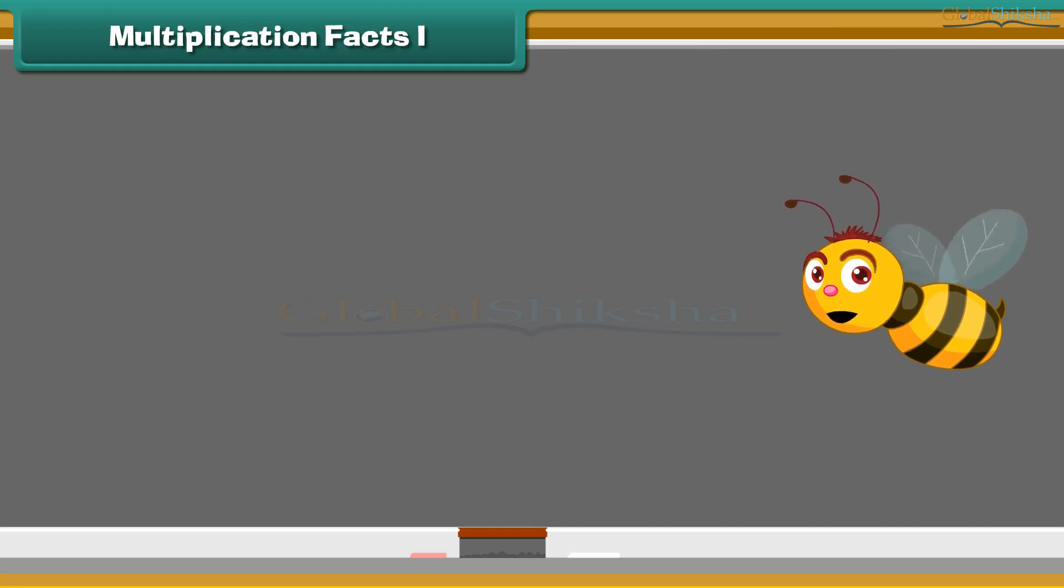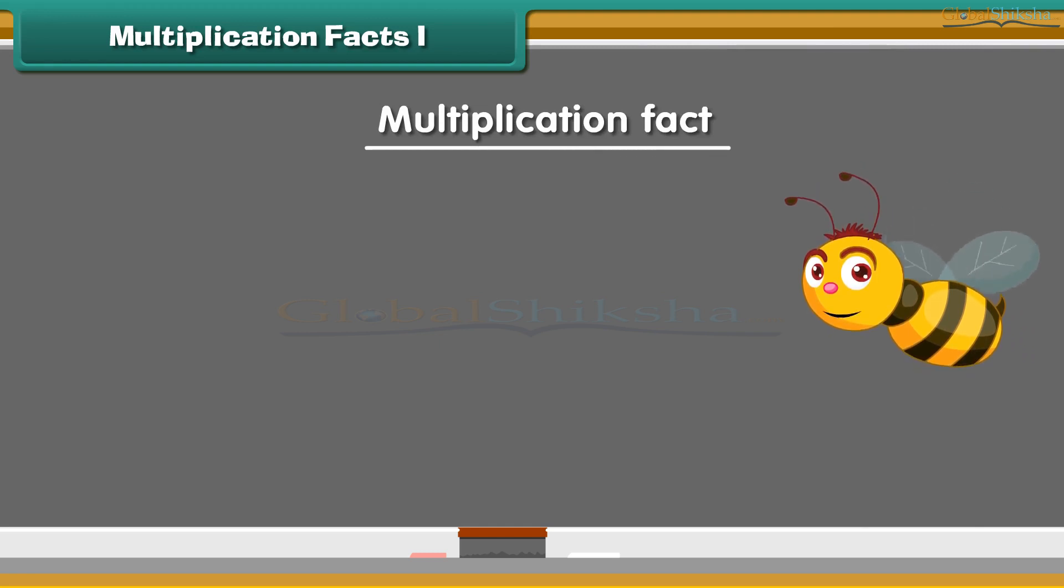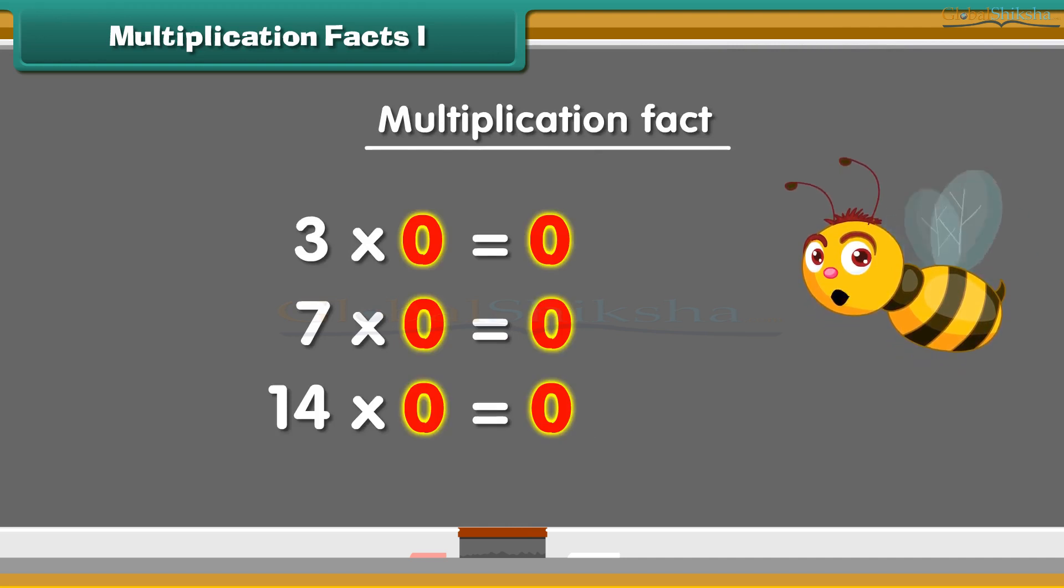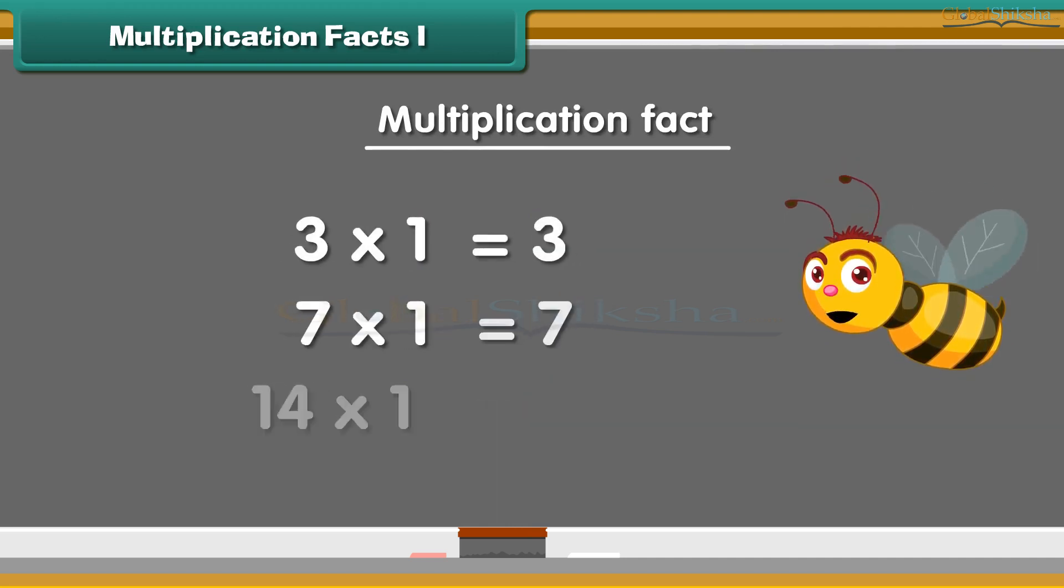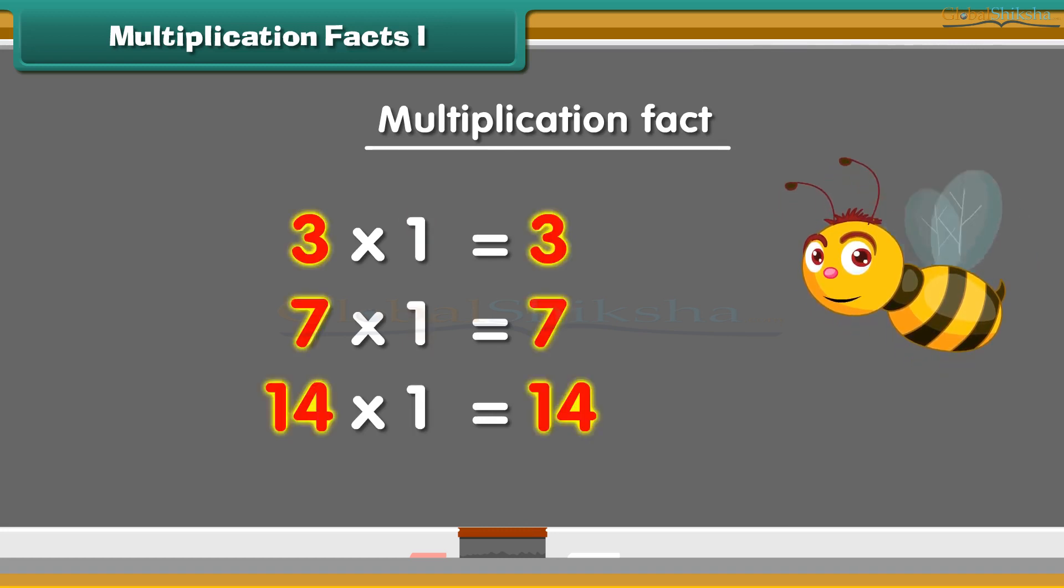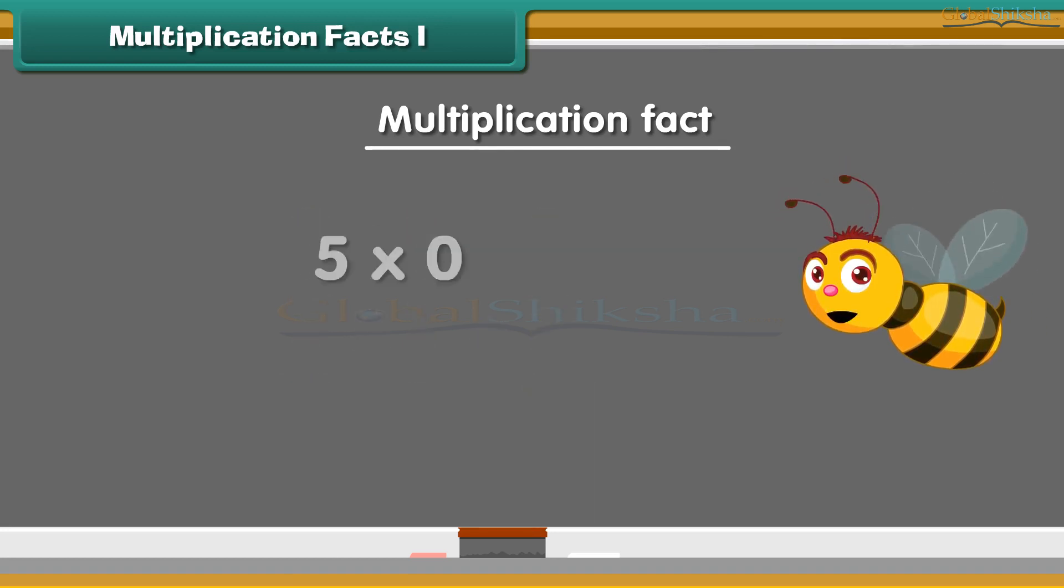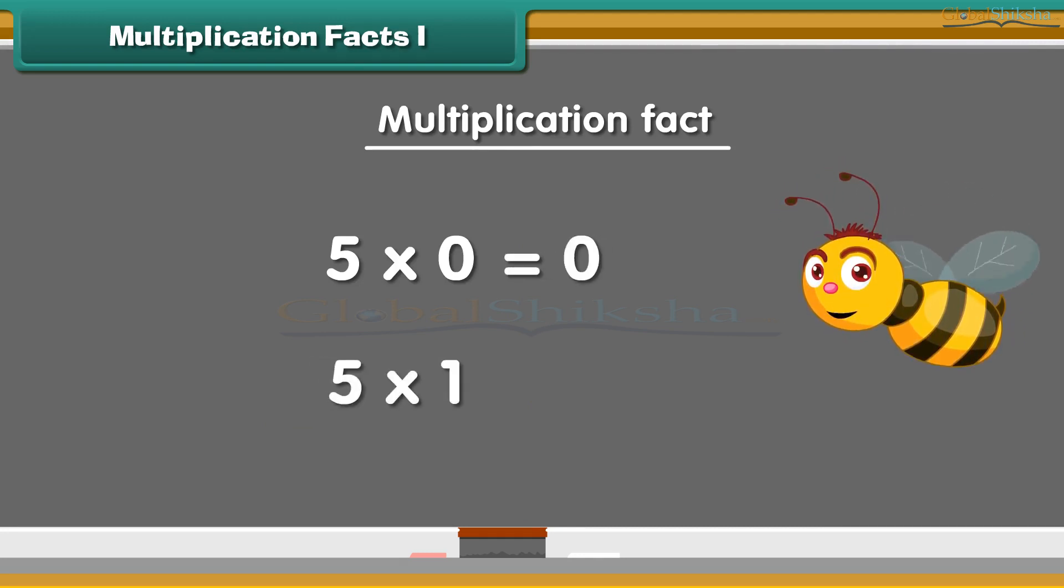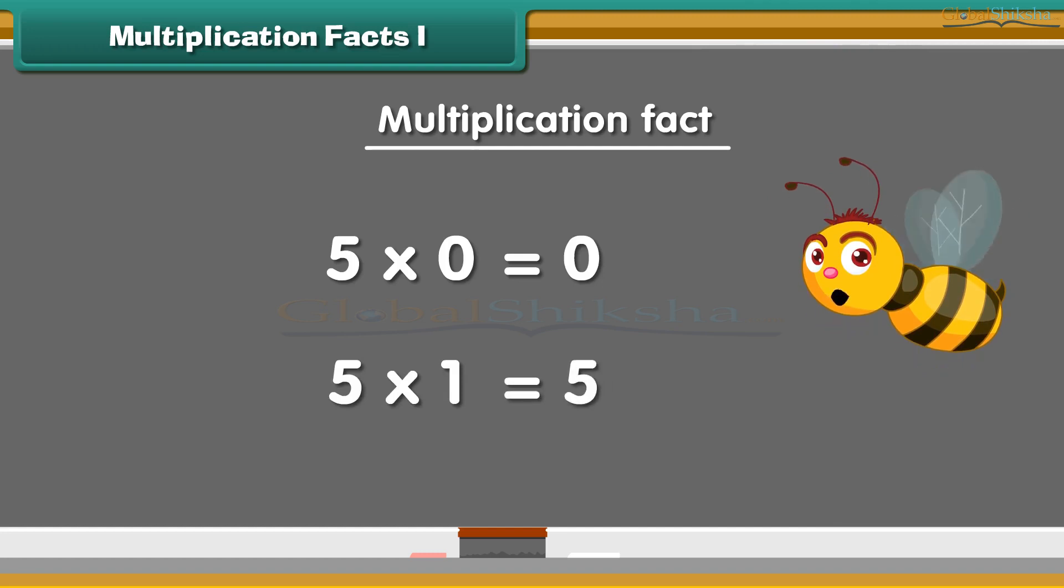We start with some multiplication facts. Any number multiplied by 0 is always equal to 0. A number multiplied by 1 is equal to the same number. Example: 5 multiplied by 0 is 0, 5 multiplied by 1 is 5.